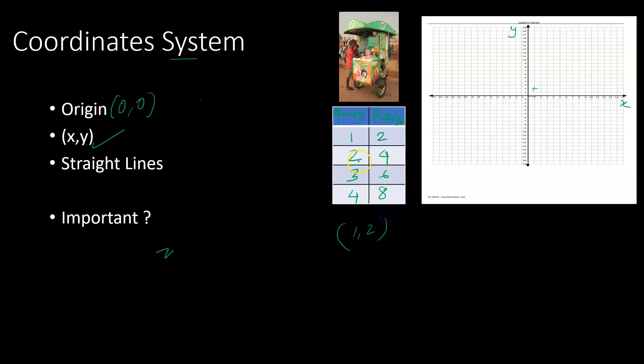This is 1, 2 in the x-direction. This is 2, 4. This is 3, 6. This is 4, 8.